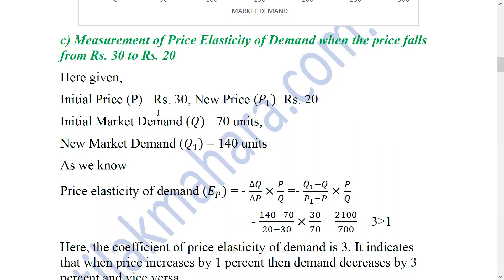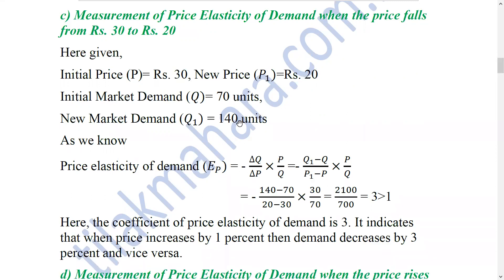The price elasticity of demand formula using the proportionate method is: minus delta Q by delta P into P by Q. Delta Q equals Q1 minus Q, and delta P equals P1 minus P. So: (140 minus 70) divided by (20 minus 30), into 30 by 70, which simplifies to 2100 by 700, which equals 3.